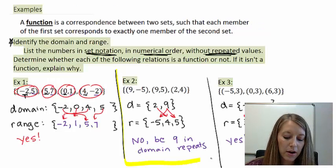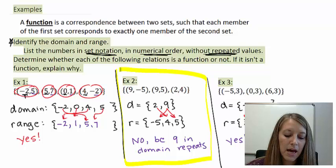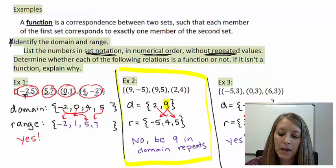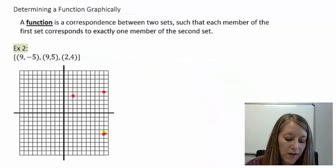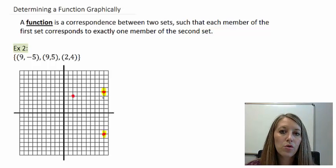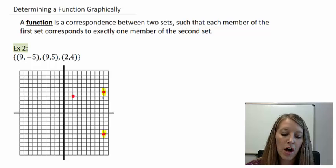Now, back here in our example, we said that this one was not a function because my 9 value in the domain repeated. So if we focus on that on the graph, notice we have a 9 value here and a 9 value here. So the way that we can adapt this to see whether a graph is a function or not is basically we can see whether there are any ordered pairs stacked on top of each other—any ordered pairs with the same x value.